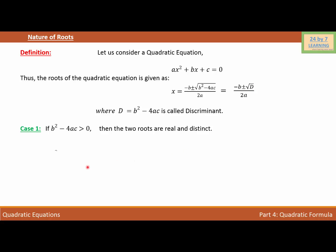Case 2: If b² minus 4ac equals 0, then the two roots are real and equal. It simply means that if the discriminant D equals 0, the roots are real and same.